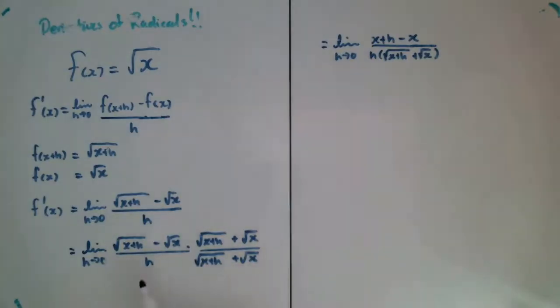And so there we go. Notice when we expand the radical, square root of x plus h times the square root of x plus h is just x plus h. The negative square root of x times the square root of x is just x. And the stuff in the middle disappears because we used the conjugate, and that's the good news.